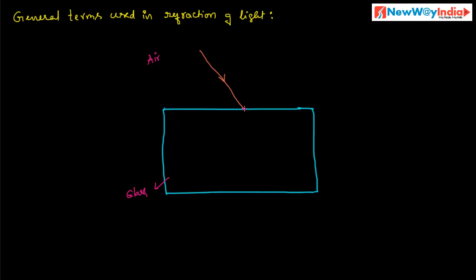This point is the point of incidence. What is the point of incidence? It is a point on the surface of separation of the optical media where the incident ray strikes. The incident ray strikes the surface of separation at one point — this point is called the point of incidence.